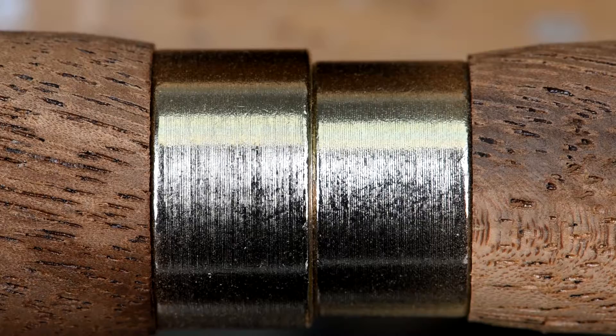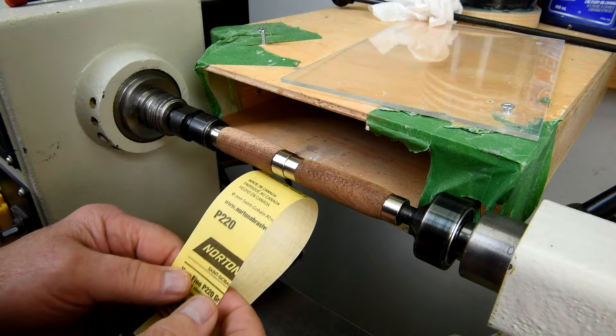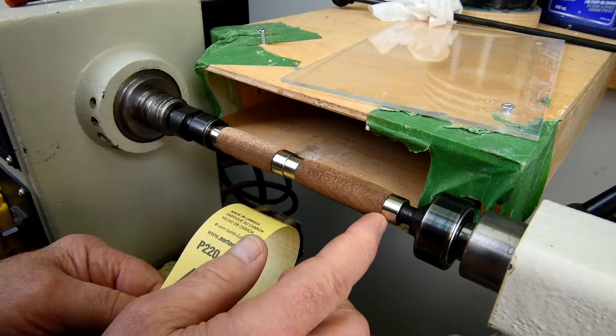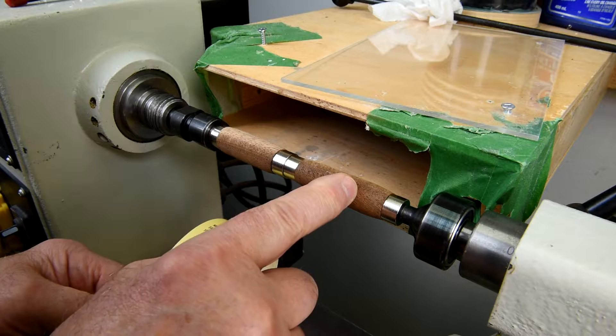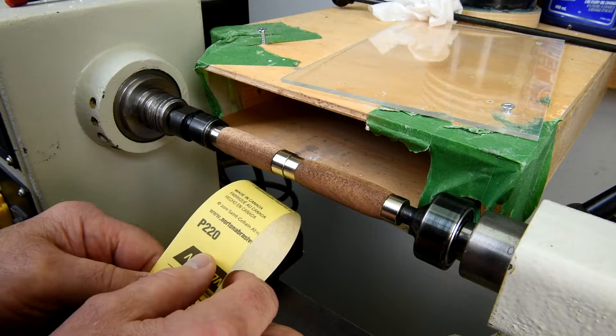Now very carefully, I'm going to sand it down the rest of the way. I'm going to start out here with 220, and I'm going to be very careful not to go right to the bushing with the 220. I'm just going to try and get rid of the high spots here. I don't know if you can see it, but right here it's higher than right here, and it shouldn't be. Little lump right there I've got to get rid of.